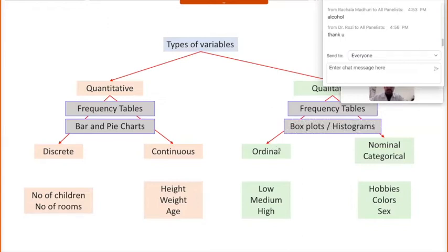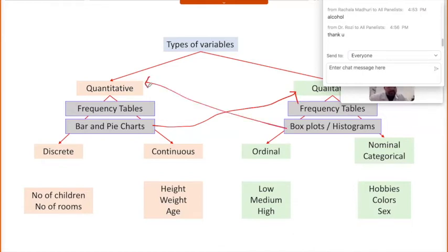So we've got these interchanged — bar charts and pie charts are for looking at qualitative data. For example, if you wanted to show the distribution of sex, you would easily make a pie chart showing 25, 30, or 40 percent of individuals are males and the rest females. Box plots and histograms are a good way of looking at quantitative data. Tables can be used to represent both quantitative and qualitative data, whereas bar and pie charts summarize qualitative data, and box plots and histograms summarize quantitative data.